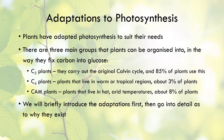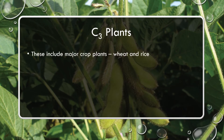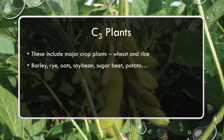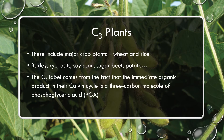We'll briefly introduce the adaptations first and then go into detail as to why they exist. C3 plants are our major crop plants - wheat, rice, barley, rye, oats, soybeans, sugar beet, potato, and many others. The soybean plant in the background is one such major crop using the C3 method. These plants grow best in cool to moist conditions.